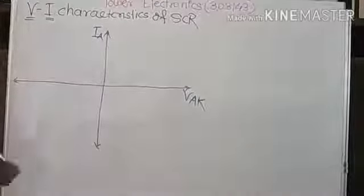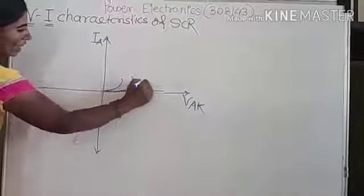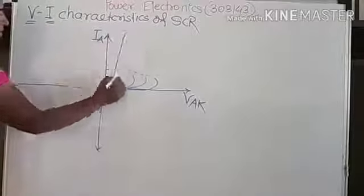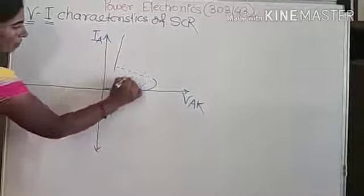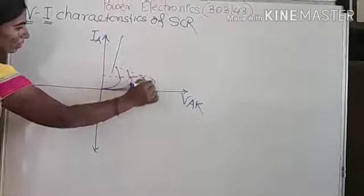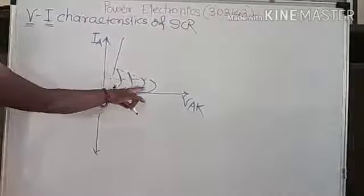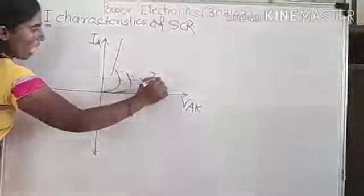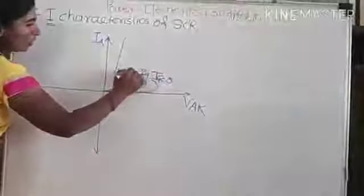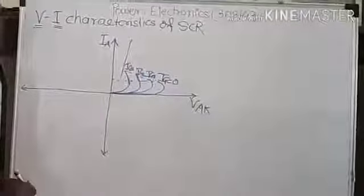The current on the Y axis is the anode current. In an SCR, there are three terminals: anode, cathode, and gate. The characteristics are shown for different gate currents: IG = 0, IG1, IG2, and IG3.